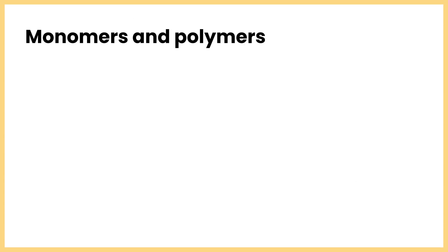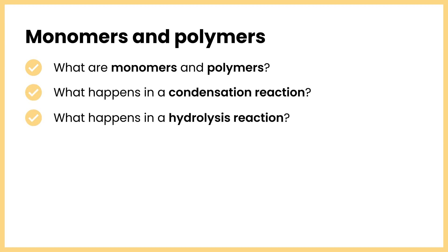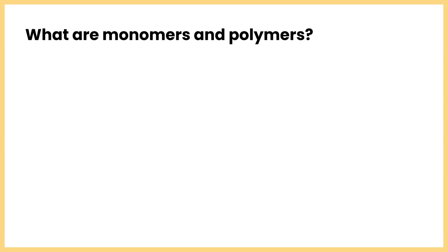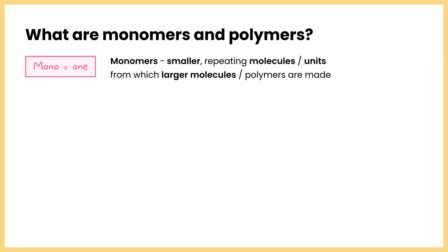In addition to looking at what monomers and polymers are, we're going to look at what happens in condensation and hydrolysis reactions, and then some examples of polymers and the monomers from which they're made. Mono means one, and that can help you remember that monomers are smaller repeating molecules or units from which larger molecules or polymers are made.